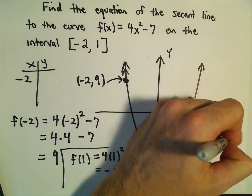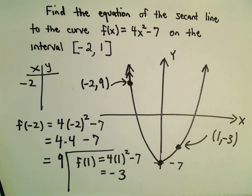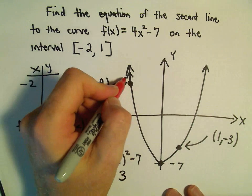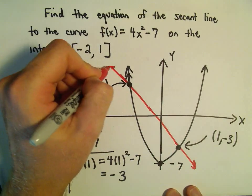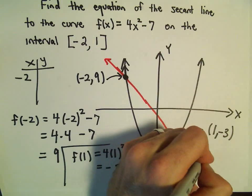All we're trying to do is just find the equation of the line that goes through those two particular points. So we're trying to figure out that equation.